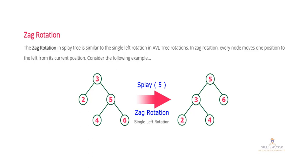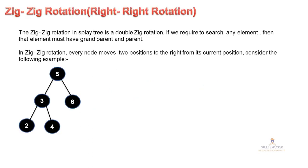Zig-Zig rotation — technically it's called double Zig or double right rotation. In Zig-Zig rotation, you perform two right rotations. To apply Zig-Zig, the element must have both a parent and a grandparent, because in Zig-Zig rotation we first rotate on the grandparent, then on the parent. So if both parent and grandparent are present, only then can you implement Zig-Zig rotation.